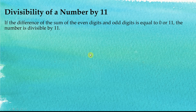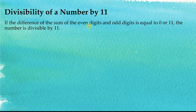In the video before this, we discussed divisibility of numbers by 11. We learned that if the difference of the sum of the even digits and the odd digits is equal to 0 or 11, then the number is divisible by 11.